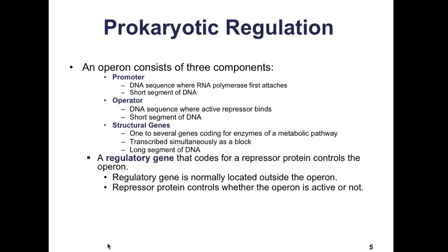The operon basically consists of three components on the DNA itself: a promoter, an operator, and structural genes. The name essentially means 'to operate.' The promoter region is the DNA sequence where RNA polymerase first attaches. Then there is the operator, which is the DNA sequence where an active repressor will bind.